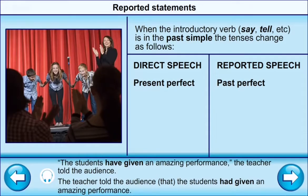When the introductory verb (say, tell, etc.) is in the past simple, the tenses change as follows: Direct speech — present perfect; reported speech — past perfect. For example: 'The students have given an amazing performance.' The teacher told the audience → The teacher told the audience that the students had given an amazing performance.